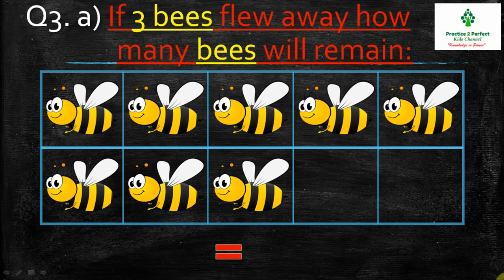Question 3: In this ten frame, a few bees are drawn. If three bees flew away, then how many bees will remain?